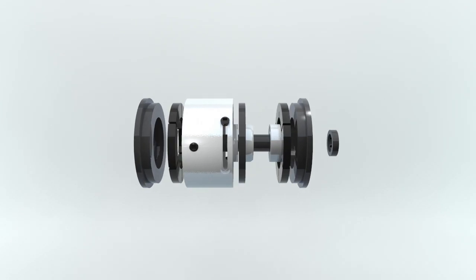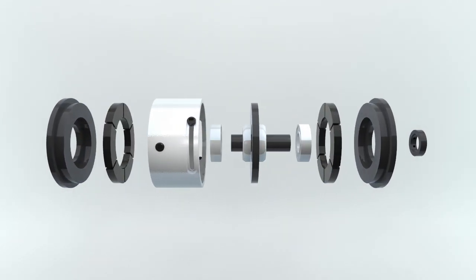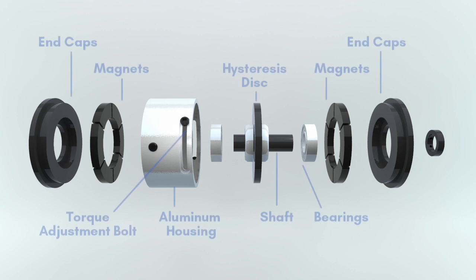The units consist of an aluminum housing, end caps—one fixed, one adjustable—permanent magnets, hysteresis disc, internal sleeve or shaft, and torque adjustment bolt.